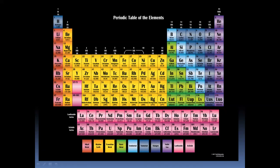Dear students, there are 118 elements in the periodic table, 7 periods and 18 groups. This periodic table is a wonderful, easy presentation of all the elements. Many scientists have contributed a lot and we have got this periodic table, and today it has made learning chemistry very easy and interesting.